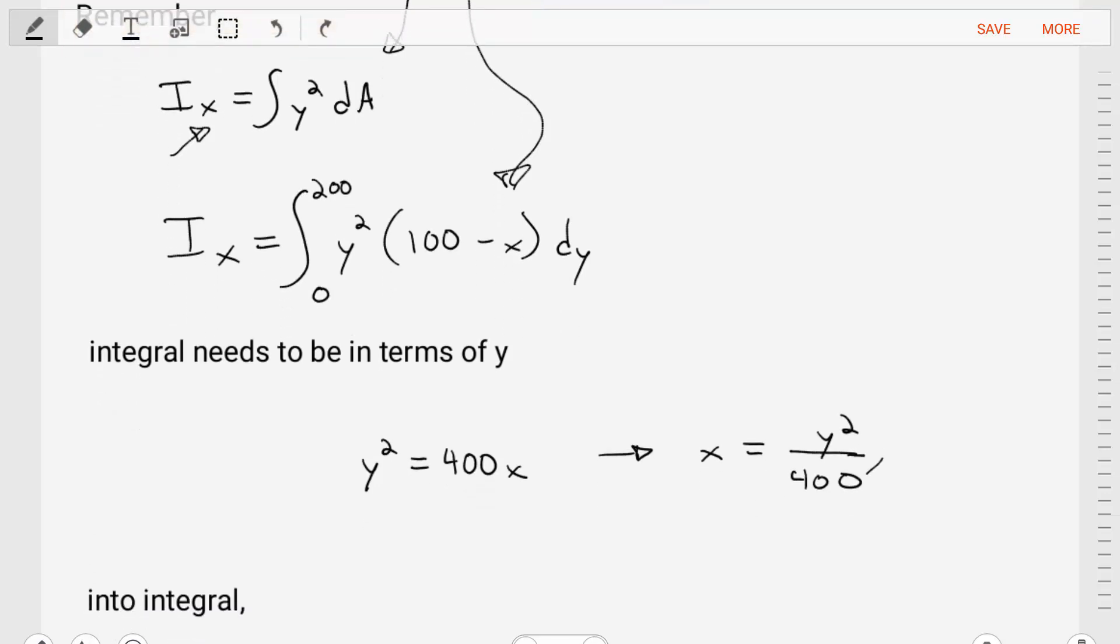Luckily, we're given the equation for the area, which is y squared equals 400 times x. So we're going to rearrange that and solve in terms of x. Now x equals y squared divided by 400.